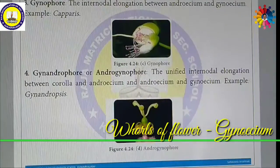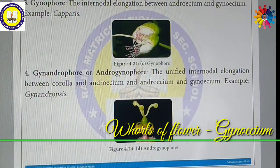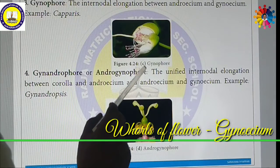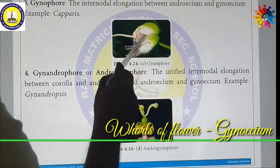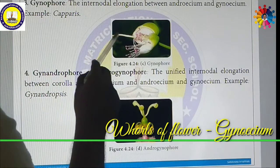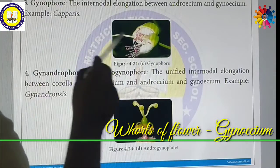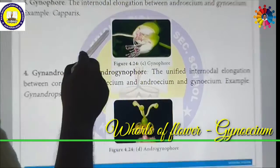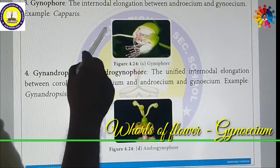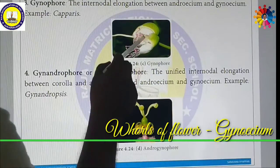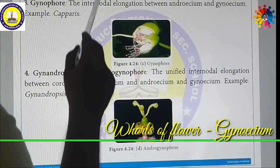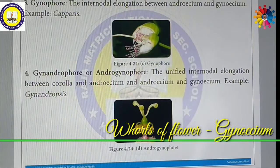The third category is called the Gynophore. This is the inter-nodal elongation between the Androecium and the Gynoecium. In between Androecium and Gynoecium, there is an elongated stalk. The inter-nodal elongation formed between Androecium and Gynoecium is called the Gynophore, which is common in Capparis.